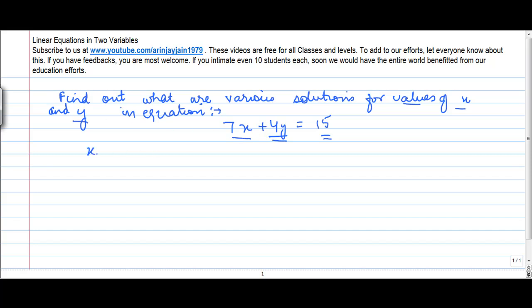Let's say x is equal to 1. So 7 into 1 plus 4y is equal to 15. 4y plus 7 is equal to 15. 4y is equal to, if you move this to the other side, 15 minus 7, which is equal to 8. Therefore y is equal to 8 divided by 4 or 2. So if x is equal to 1, y is equal to 2. So we say that (1, 2) is one of the possible solutions for this equation.